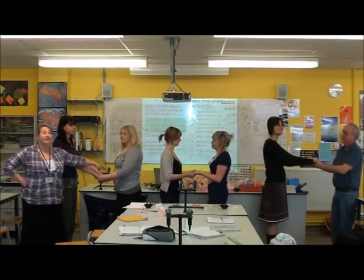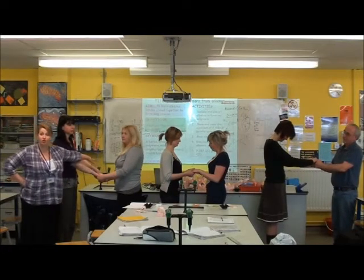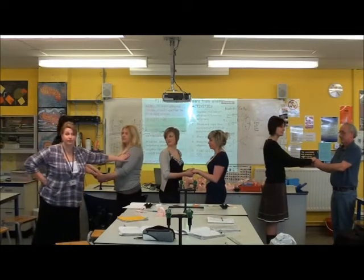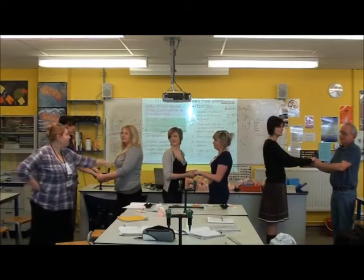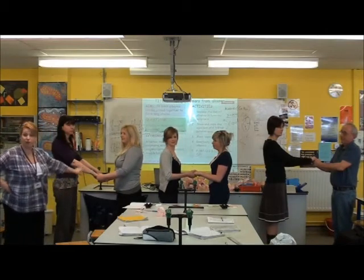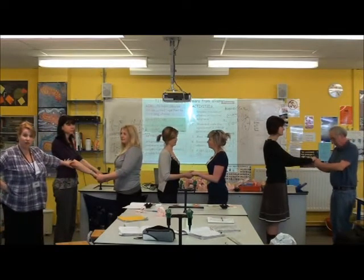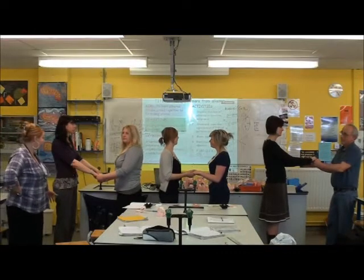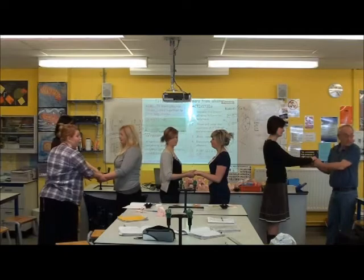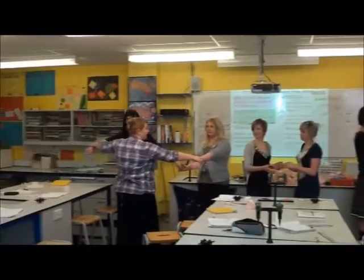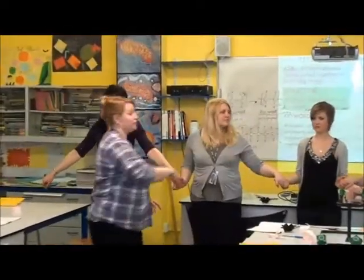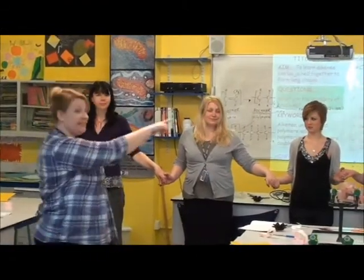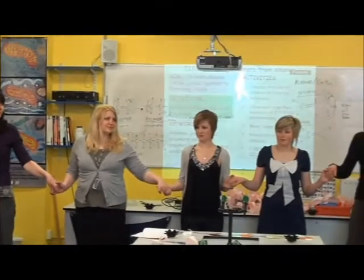Your two hands are representing a double bond. You are a carbon atom in an ethene molecule. Ethene is the monomer. Now, in addition polymerization, we get the double bond and adding across that double bond. So we now have a long chain of ethene molecules.